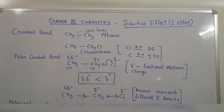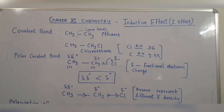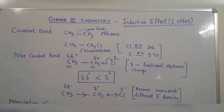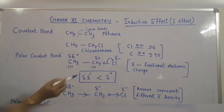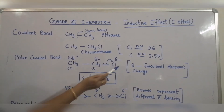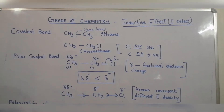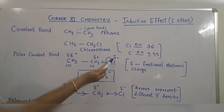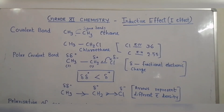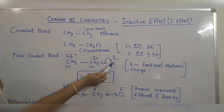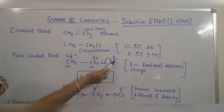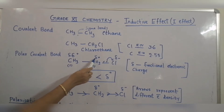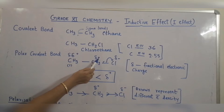When a covalent bond is formed between atoms of different electronegativity, for example in chloroethane, there is a carbon-chlorine bond. Chlorine has the highest electronegativity of 3.6, whereas carbon has an electronegativity of 2.55. Because of this difference in electronegativity, the electron pair is shifted more towards chlorine. Chlorine attracts electron pairs towards it and develops a fractional negative charge represented by delta minus, whereas carbon gains a fractional positive charge represented by delta positive.